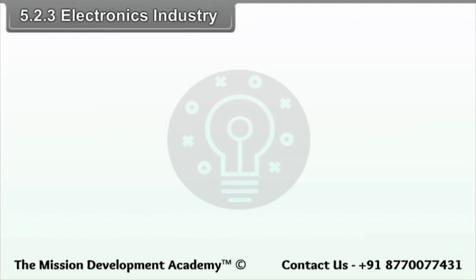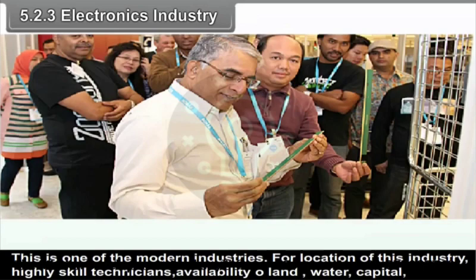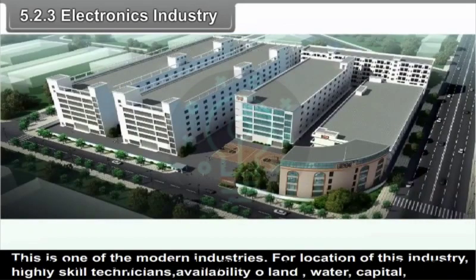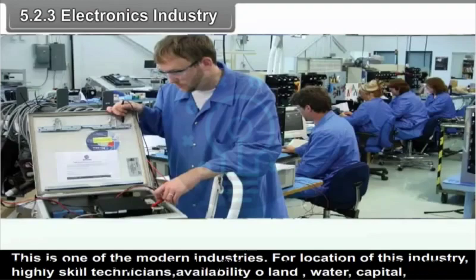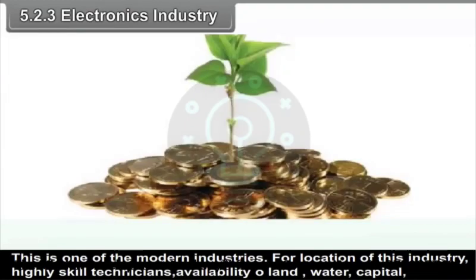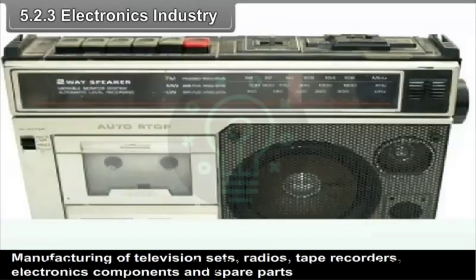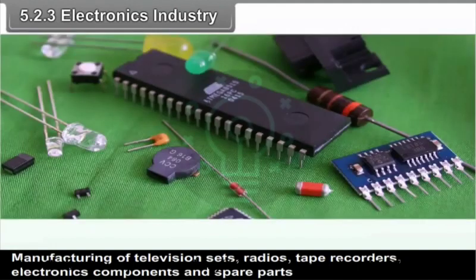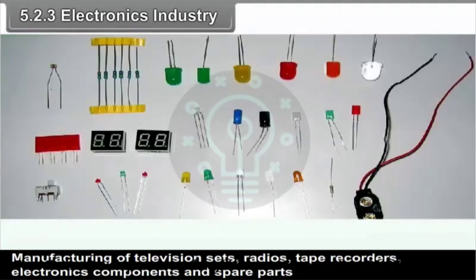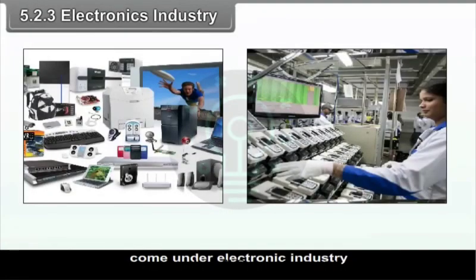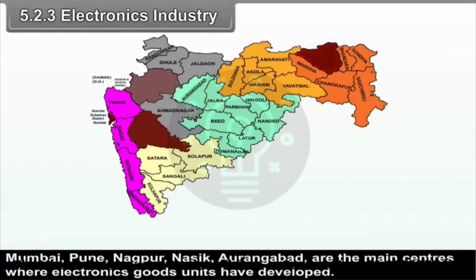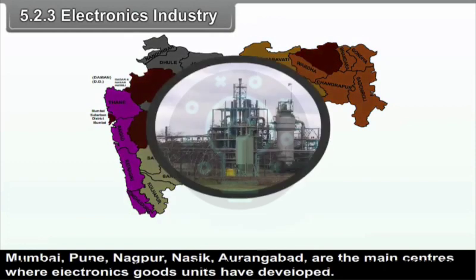Electronics industry is one of the modern industries. For location of this industry, highly skilled technicians, availability of land, water, capital, energy and latest technology are the prerequisites. Manufacturing of television sets, radios, tape recorders, electronics components and spare parts come under electronic industry. Mumbai, Pune-Chinchwad, Nagpur, Nasik and Aurangabad are the main centres where electronics goods units have developed.